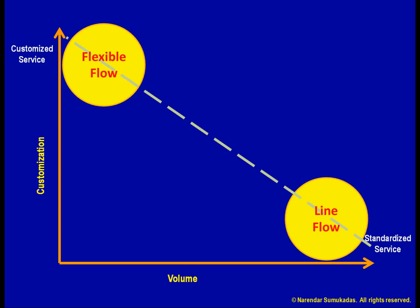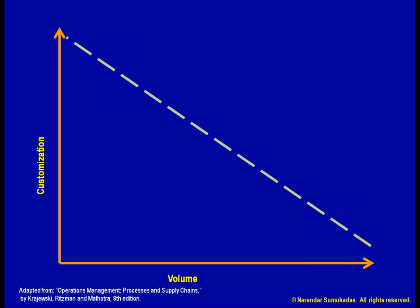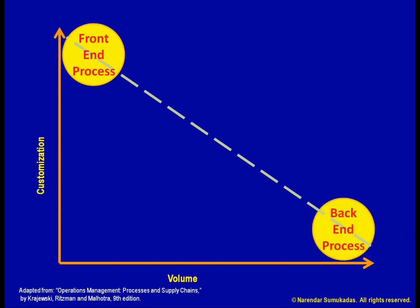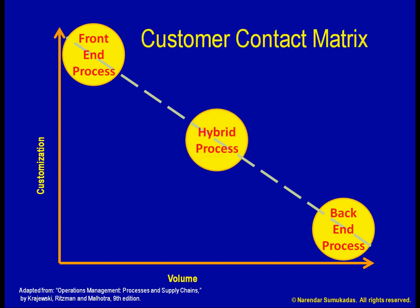Expanding on this diagram further, we can identify three kinds of processes. On the upper left-hand side of the diagonal, we have a front-end process. On the lower right-hand side, we have a back-end process. In the middle, we have a hybrid process. We call this the customer contact matrix.